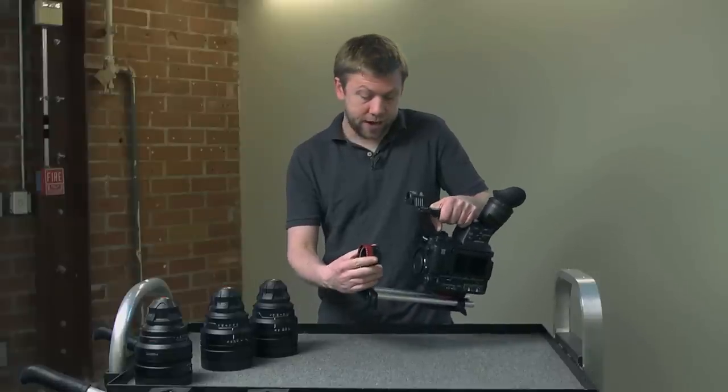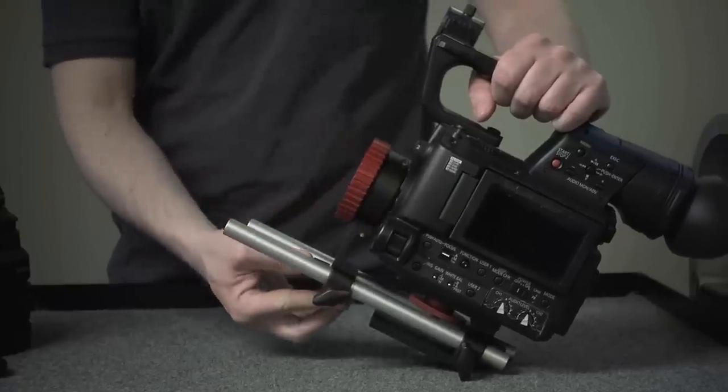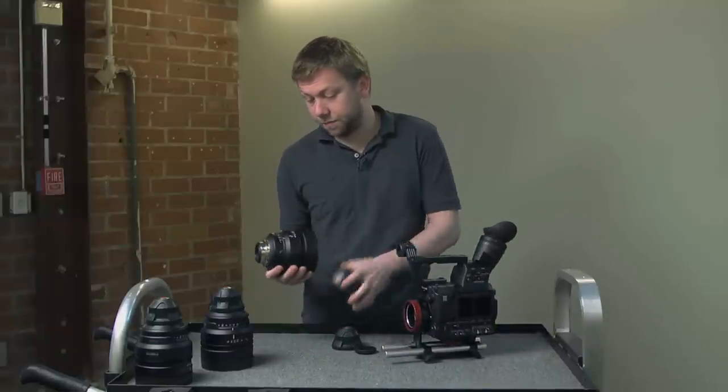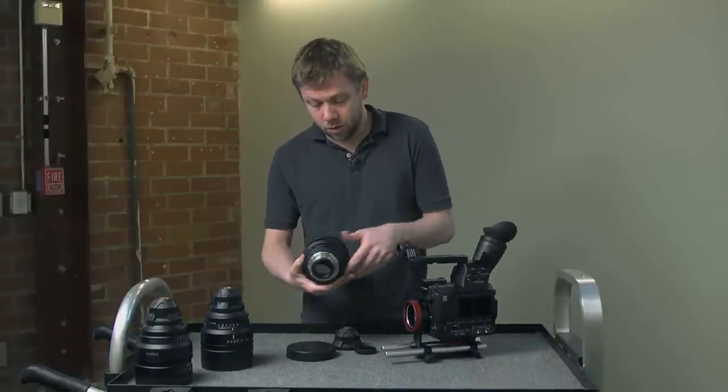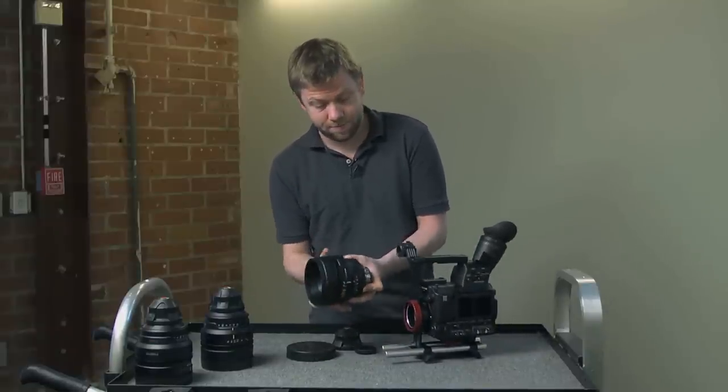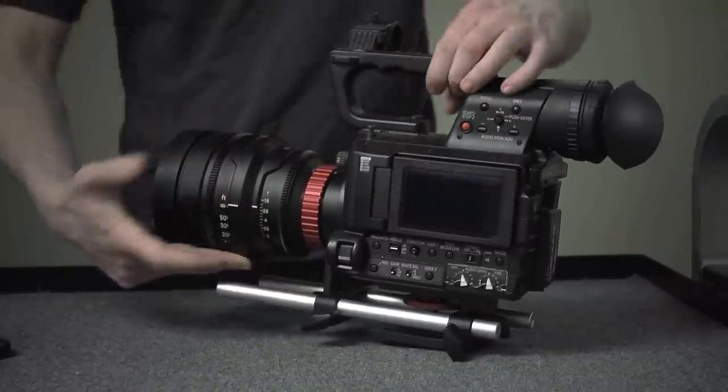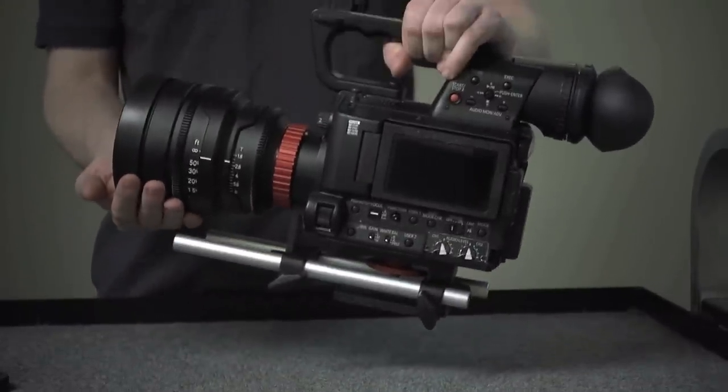Then you grab your PL adapter, put it on there, get it in position, tighten it real quick and you can take any PL glass, make sure it's right side up, lock it in place and now we have a PL mounted AF100.